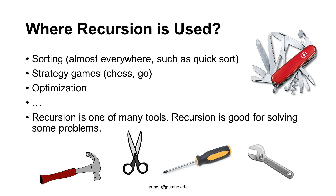Recursion is a way to solve problems. Some problems can be solved well by recursion; others should not use recursion. You can think of recursion as a tool — like a hammer, scissors, screwdriver, or wrench. A hammer is good for hitting a nail, but not for cutting paper. You should not say a hammer is not good simply because it cannot cut paper. Whether a tool is good or not depends on the problems you want to solve.